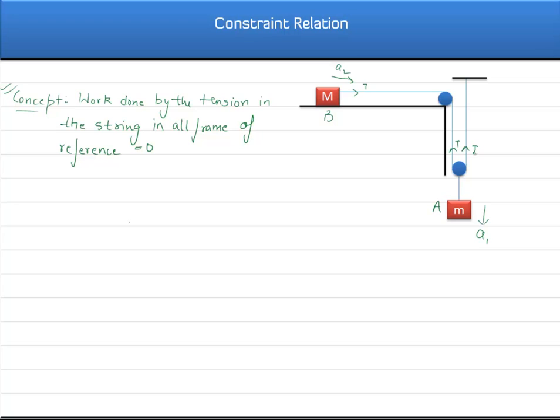If tension T is present in this string, this should also be T, there should also be T. Now since the pulleys are massless, that means net force on this should be 0. If F net on this is 0, that means in the downward direction the tension should be 2T. So on block A an upward tension of 2T is acting and on block B a tension T is acting.